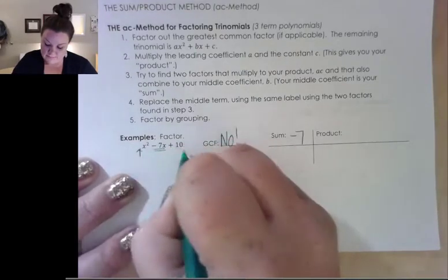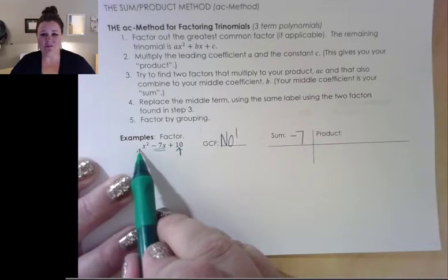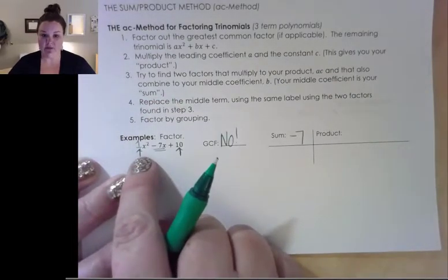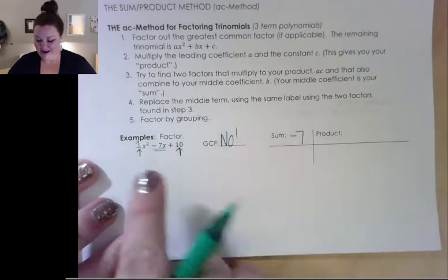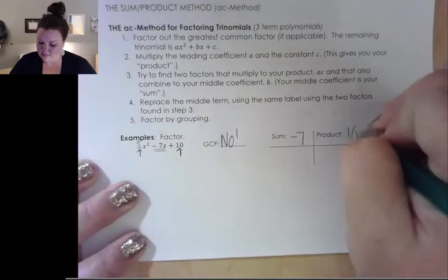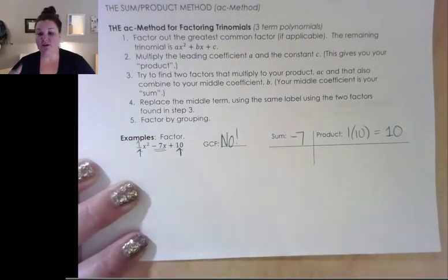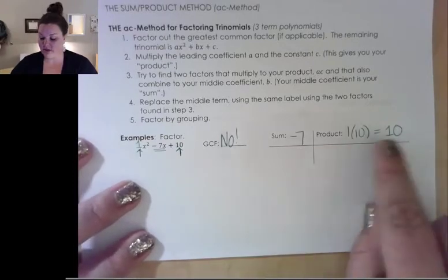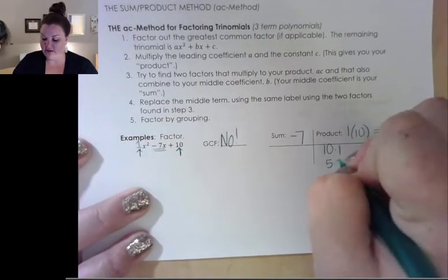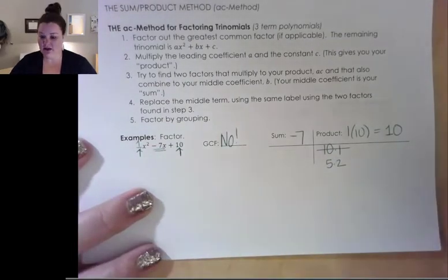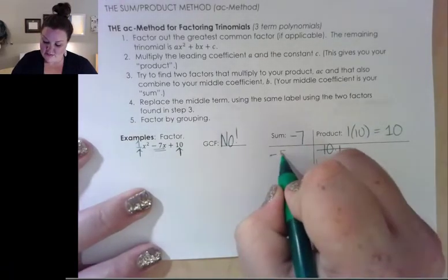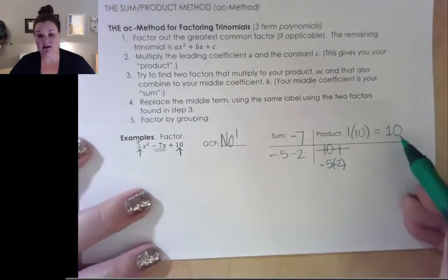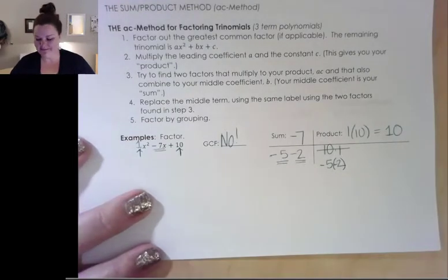I also need to make sure I don't mess up the polynomial I already have. The way we come up with our product is we look at our first coefficient and our last coefficient. There's not a coefficient written in front of x², so that's an implied one — it's one x². Our product is 1 times 10, which equals 10. So I need two numbers that multiply to 10 and combine to negative seven. Five and two work: negative five minus two gives negative seven, and negative five times negative two gives positive ten.